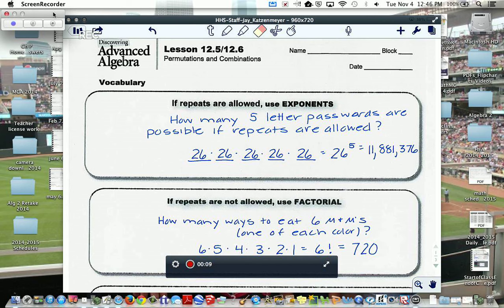It'd be each position, each letter, there'd be 26 choices. So you could put a 26 in each blank, which is multiplication, or 26 to the 5th power, and that would turn out to be 11,881,376.